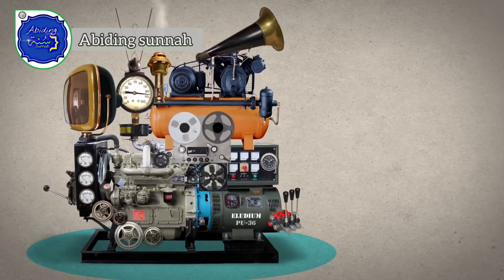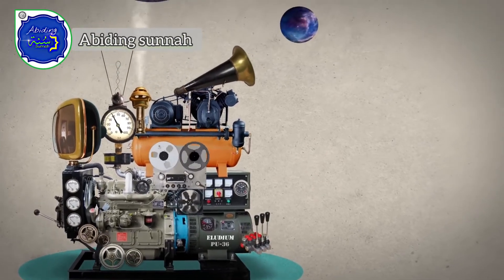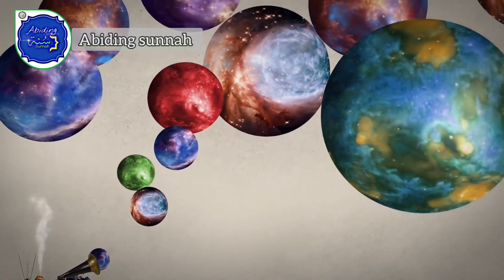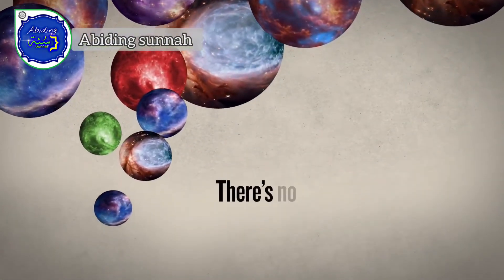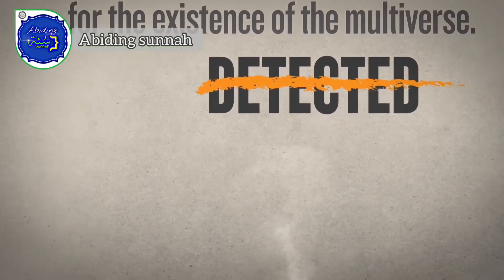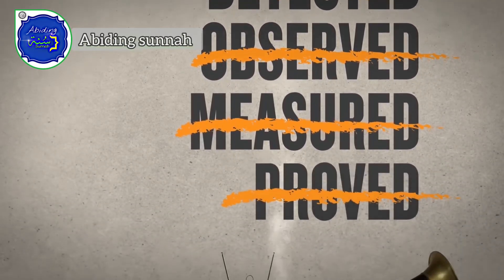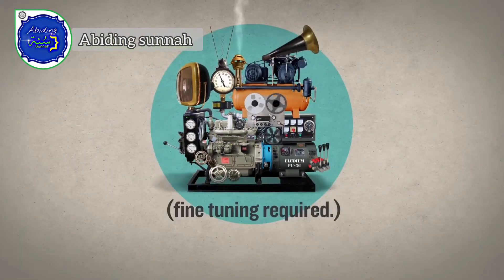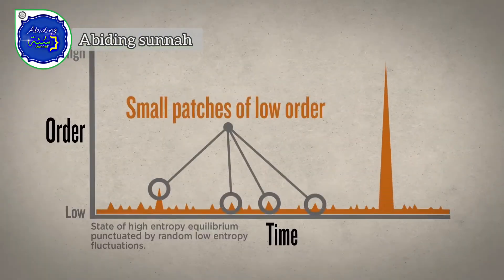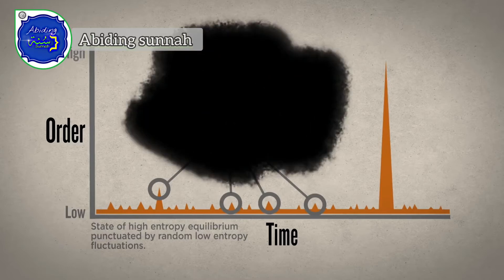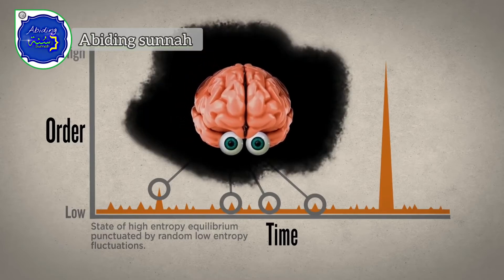They imagine a universe generator that cranks out such a vast number of universes that, odds are, life-permitting universes will eventually pop out. However, there's no scientific evidence for the existence of this multiverse — it cannot be detected, observed, measured, or proved. And the universe generator itself would require an enormous amount of fine-tuning. Furthermore, small patches of order are far more probable than big ones, so the most probable observable universe would be a small one inhabited by a single, simple observer.